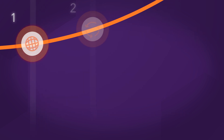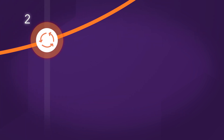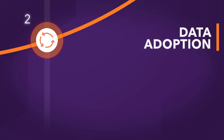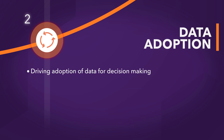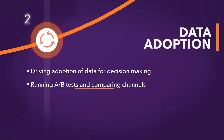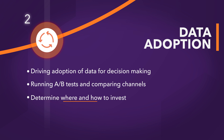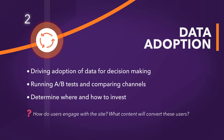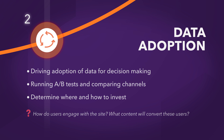As you start to gather more information about your users' behavior, you'll have reached Level 2. At this stage, your business is driving adoption of data for decision-making. You're most likely running A/B tests regularly and comparing different channels and devices to determine where best to take actions for your business. With this data, you can determine where and how to invest efforts to gain a larger audience, and you'll soon realize that you want to understand how users engage with your site and what content is most likely to convert them.